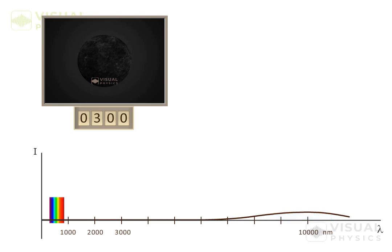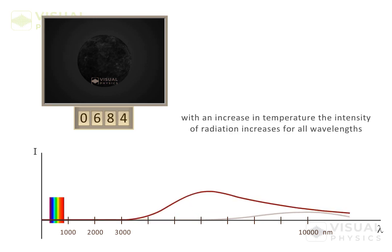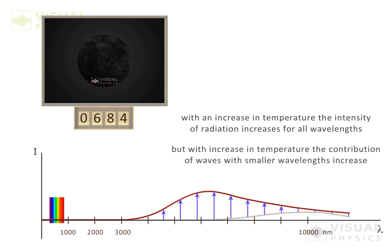When we start to heat an object, as the temperature of object increases, the dominant wavelength of radiation decreases. Though with an increase in temperature, the intensity of radiation increases for all wavelengths, the contribution of waves with smaller wavelengths increases.